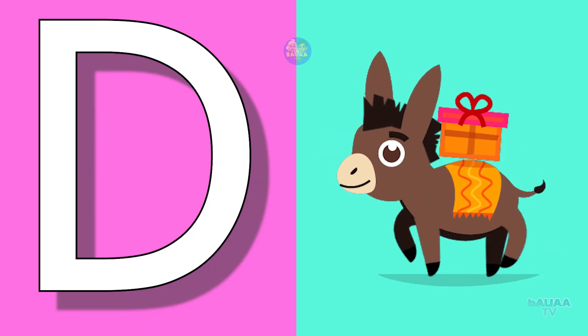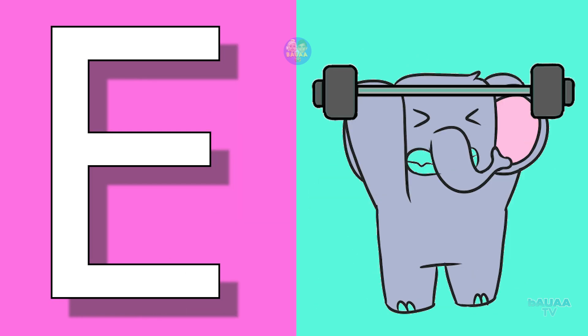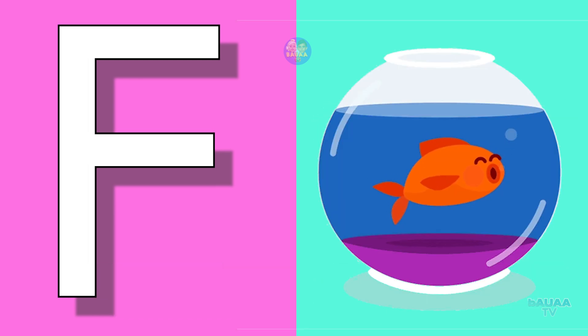D for donkey, donkey means gadha. E for elephant, elephant means haathi. F for fish.